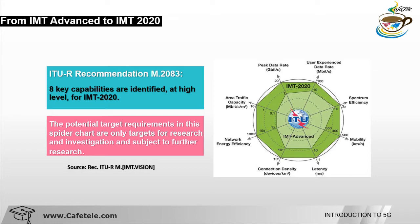These capabilities were identified through input from regional bodies, research projects, operators, administrations, and other organizations. The KPIs were designed and developed by many vendors and operators, who reached consensus on the requirements for IMT-2020. In total, 13 capabilities are defined in ITU-R, but out of those 13, 8 were selected as the key capabilities.